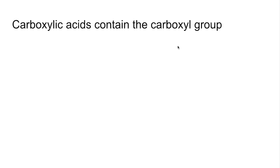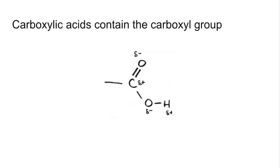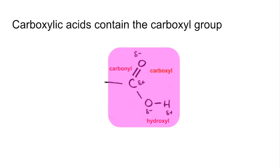If we move on to the functional group itself now, which is called the carboxyl group — there it is drawn up there and you can see the polarity of the bonds. In it we've got a carbonyl group and a hydroxyl group, but when you put them together in this functional group it becomes the carboxyl group, with its own unique functional group properties.